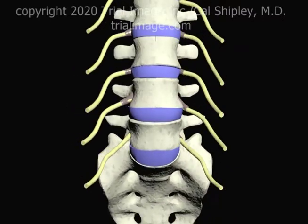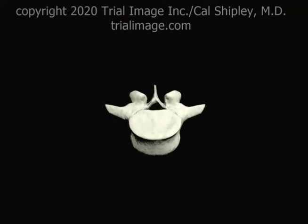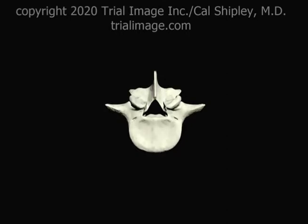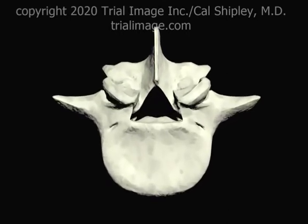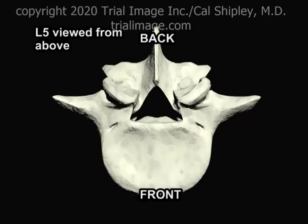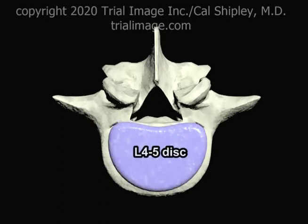Now let's return to the frontal view of the spine and more closely examine the L5 vertebra and its anatomical relationships. Looking from above, the L4-5 intervertebral disc sits atop the vertebral body. The spinal canal is located directly behind the vertebral body.